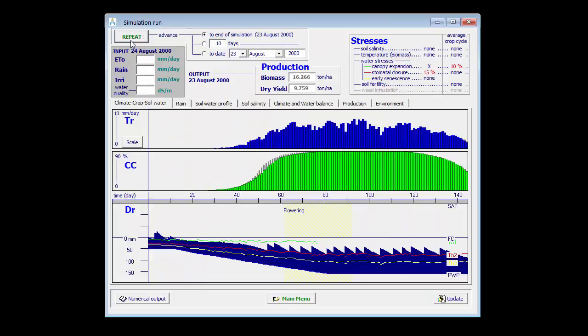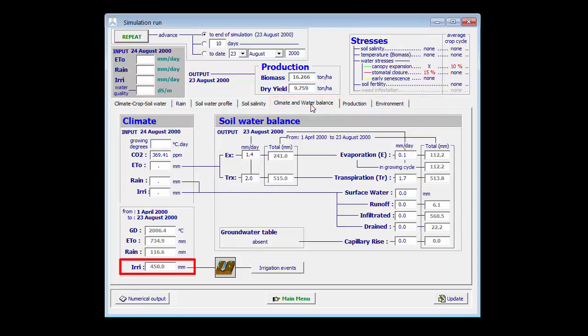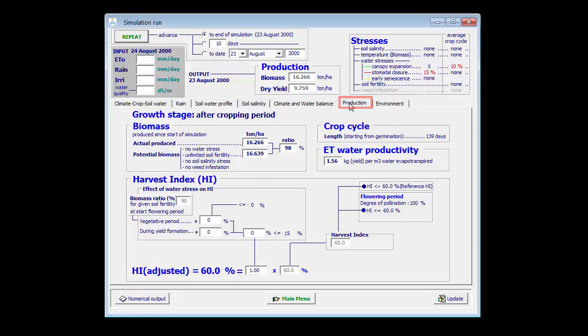When I run this example, I can see that my yield drops slightly, that I have some canopy stress throughout the season, but that my irrigation application drops to 450 mm, which corresponds with 15 events. My ET water productivity increases to 1.56.